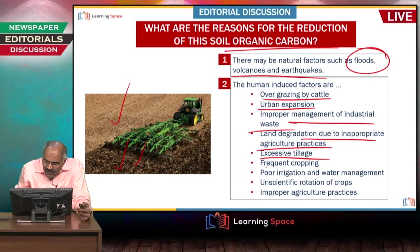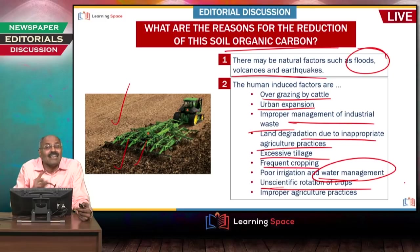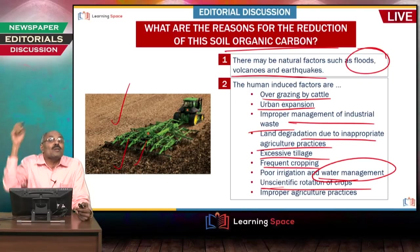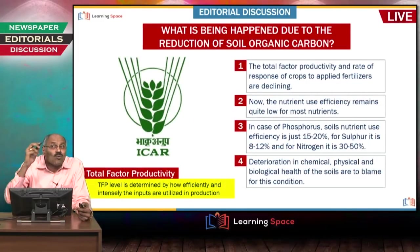Additional causes include frequent cropping, poor irrigation and water management, and unscientific rotation of crops. In fact, rotation of crops is not being undertaken properly in countries like India, and if at all it is being undertaken, it is on unscientific lines.